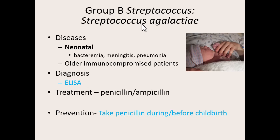In infants, S. agalactiae can cause bacteremia — bacteria in the blood, which can be very deadly — as well as meningitis and pneumonia. This usually occurs in about three in every thousand births. You think that's not many, but when you consider how many births happen in local hospitals every year, three infants can be contracting this bacterial infection and it can be deadly. It can also cause diseases in immunocompromised elderly patients. It usually doesn't cause any issues for healthy adults — it's primarily the newborns with no working immune system where it causes the biggest issues.